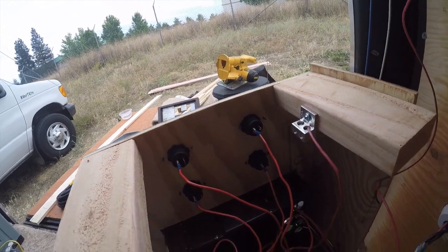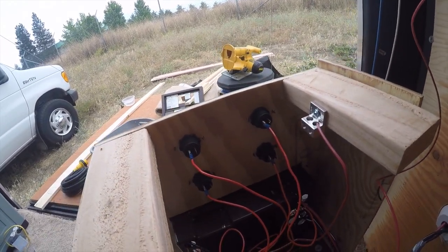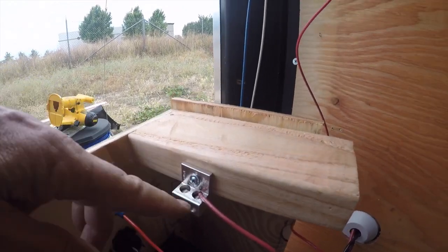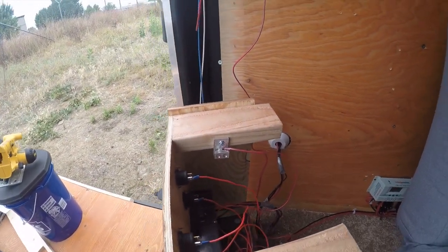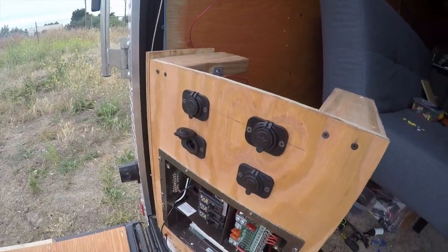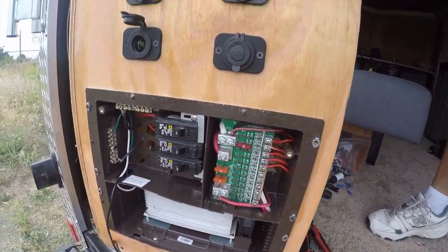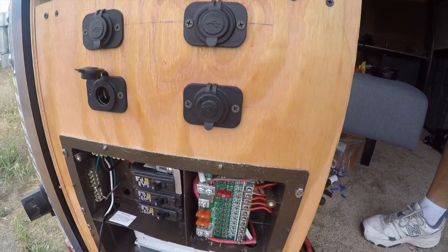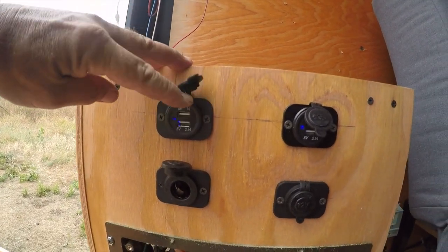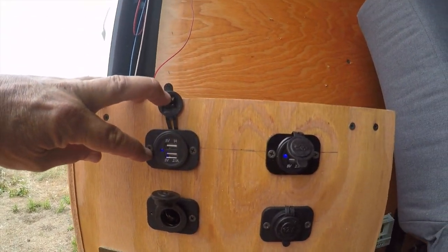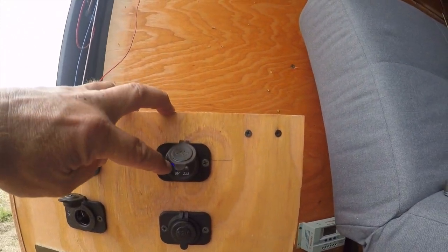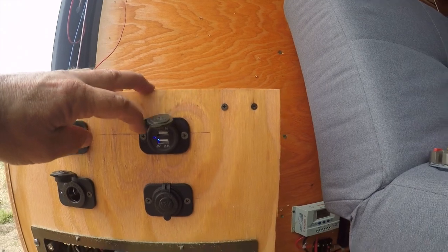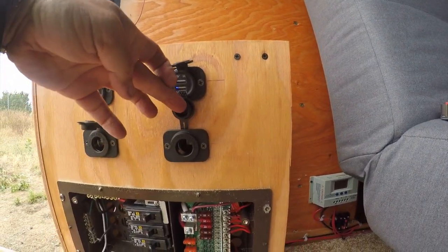Alright, I got the positives all wired into the box, and then I added that there, that's gonna be like a junction bar for the negatives for the ground. So all the grounds will go there instead of running a wire, each wire to the panel. All right, we got power! See that little blue light? That's a little blue LED light that means there's power on these plugs, are live with 12 volts. Good to go.